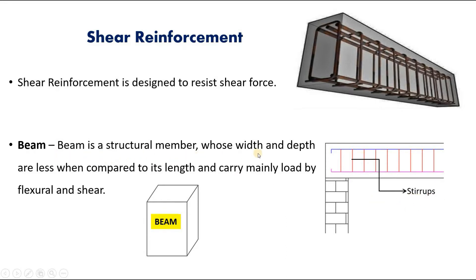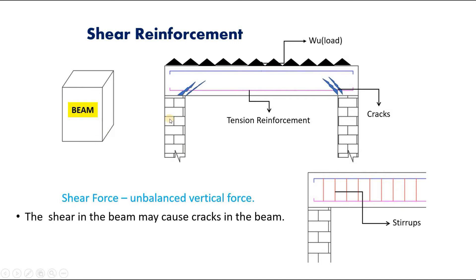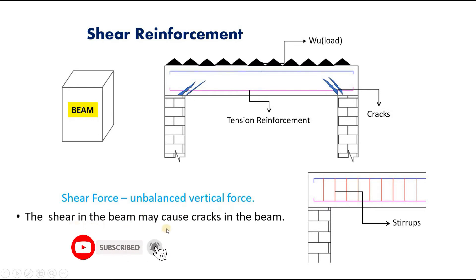A beam is a structural member whose width and depth are less when compared to its length, and it carries load mainly by flexure and shear. When a load is applied on a beam, due to the tension steel provided, bending can be prevented, but shear may occur. An unbalanced vertical force is called shear force, and shear in the beam may cause cracks. To prevent these cracks, shear reinforcement is provided.